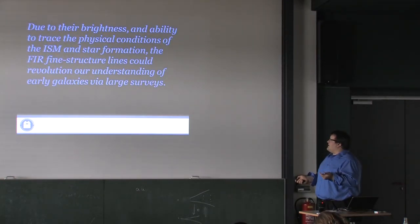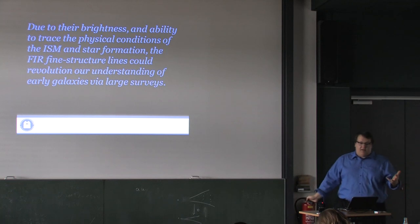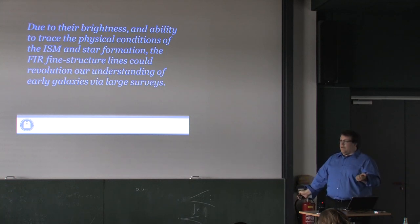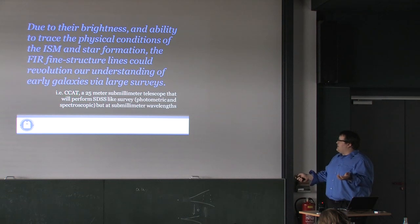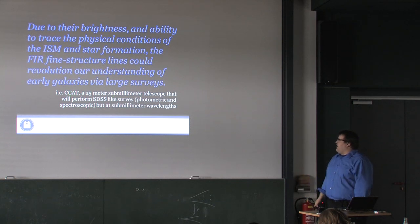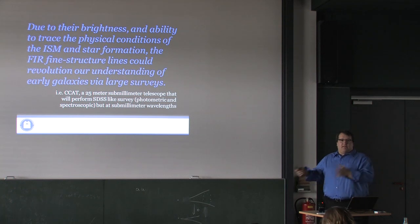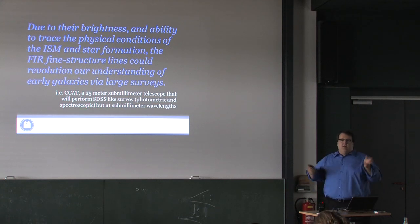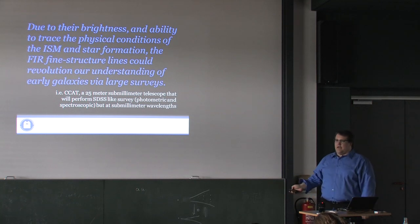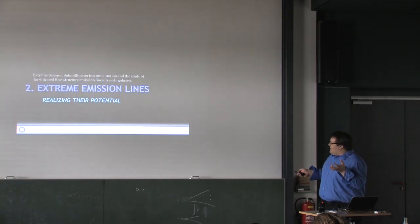Due to their brightness and ability to trace physical conditions of the ISM and star formation, far-infrared fine structure lines could possibly revolutionize our understanding of early galaxies via large surveys. Specifically, there's a proposed 25-meter submillimeter telescope called CCAT — Cornell is a major partner — that would perform SDSS-style surveys at submillimeter wavelengths, both photometric and spectroscopic, detecting tens to hundreds of thousands of galaxies and hopefully measuring these far-infrared fine structure lines with a very strong statistical sample.